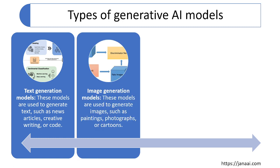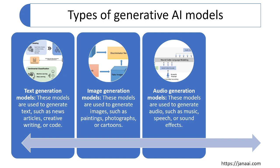The next type is image generation models. These models are used to generate new images such as paintings, photographs, and cartoons. If you provide an image as input, the model can generate new images based on it. Audio generation models are used to generate audio such as music, speech, and sound effects. If you provide textual data as input, it can generate new audio or speech.